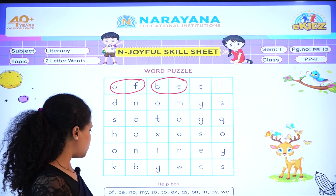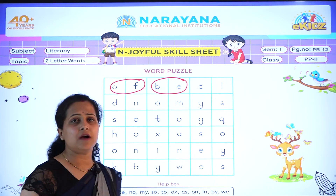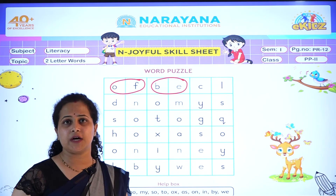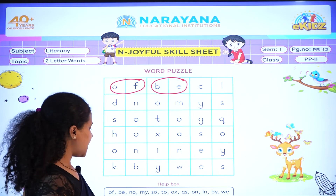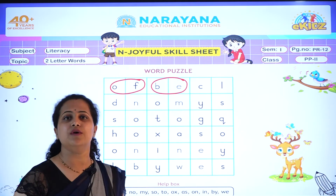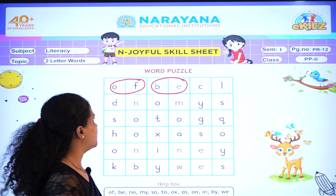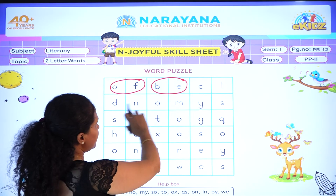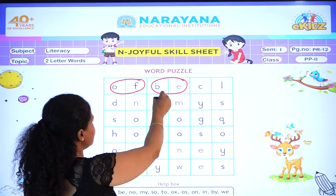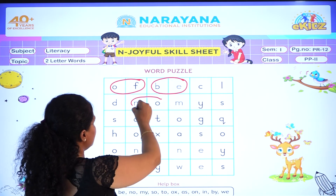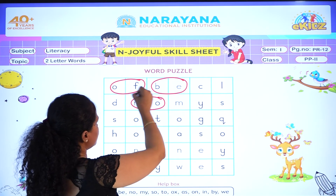Now see which is our next word. N-O. No. Where is 'no'? Here is 'no'. Now let's circle. No.